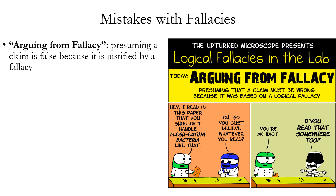What does it actually mean then? It means the argument fails to justify the conclusion. Failure to justify the conclusion means we don't know whether the conclusion is true or false based on that argument — it does not prove the conclusion is false. There could be another non-fallacious argument out there that does prove the conclusion. So it is a mistake to conclude that a claim must be false just because a fallacy is being used to justify it. Be careful in how you deploy fallacies: when you defeat an argument by successfully labeling it a fallacy, you don't thereby necessarily prove the conclusion false.